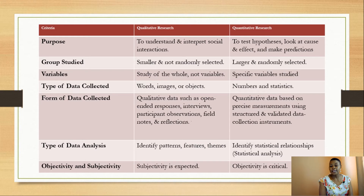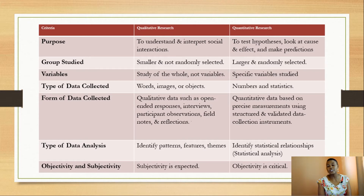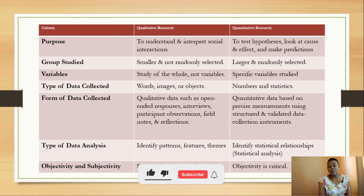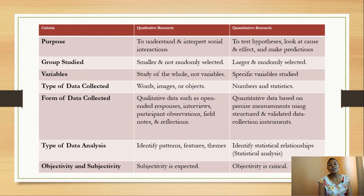We start with the criteria of purpose. The purpose of qualitative research is to understand and interpret social interactions, whereas the purpose of quantitative research is to test hypotheses, identify causality, and make predictions. Qualitative aims to investigate phenomena in depth, whereas quantitative breaks social phenomena into variables and constructs. The next criteria is the group studied: in qualitative, the group is smaller and not randomly selected because we look for an information-rich sample with no aim to generalize findings. Quantitative studies a large, randomly selected sample to ensure it is representative of the population, because the aim is to generalize findings.